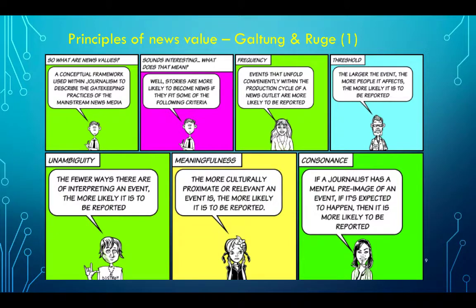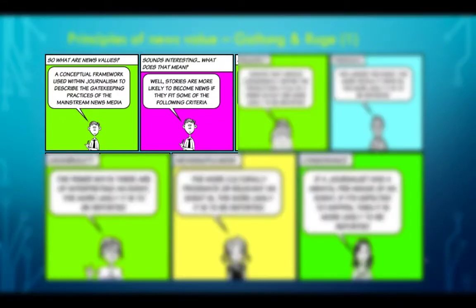Principles of news value. According to Galtung and Ruge, there are principles of news value which news organizations, journalists and reporters follow when producing the news. This is a conceptual framework used within journalism to describe the gatekeeping practices of the mainstream news media. Journalists are filters — they do not publish or cover everything, because they are selective. This selection takes place according to criteria for news value.